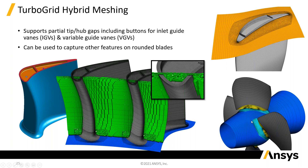You can then build an unstructured mesh in that region. You don't have to take it all the way out either — it's a finite region. That could be on the hub or on the tip out on the shroud. It builds a really nice quality mesh, which has really extended the use of TurboGrid.